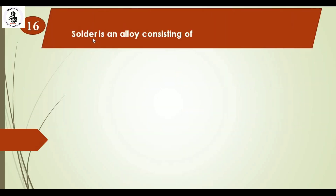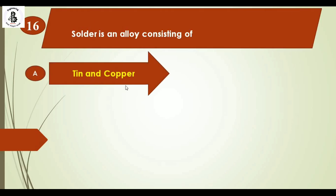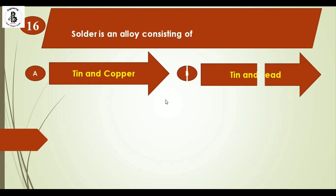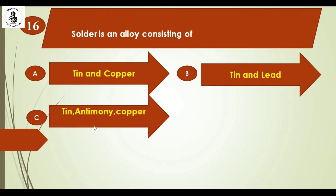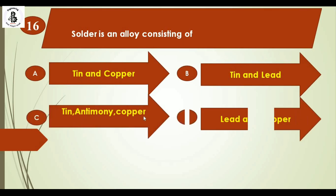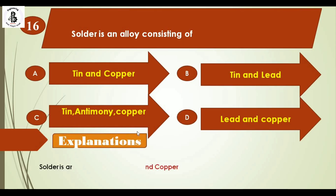Solder is an alloy consisting of: option A tin and copper, option B tin and lead, option C tin, antimony and copper, and option D lead and copper. Solder is an alloy consisting of tin and copper. The right answer is option A.